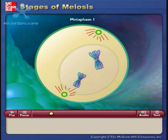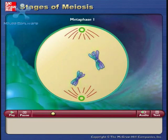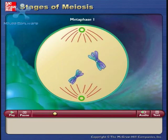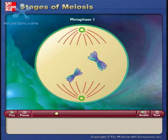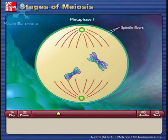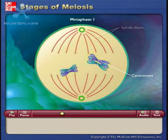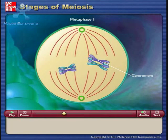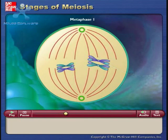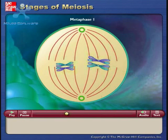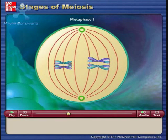By metaphase I, the nuclear membrane has disappeared and the microtubules form a spindle. Spindle fibers attach to only one side of each centromere, and the two homologous chromosomes attach to microtubules orienting from opposite poles. Each pair of homologues then lines up on the metaphase plate.